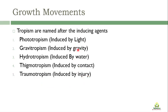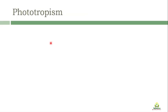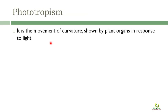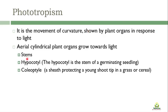First, we are going to talk about phototropism. As the name indicates, it is a movement of curvature - not the complete movement of the plant, but a movement of curvature due to differential growth. Phototropism can be defined as a difference in growth shown by the curvature of the plant organ in response to light. Aerial cylindrical plant organs grow towards light, as the shoot system is positively phototropic while the root system is negatively phototropic.